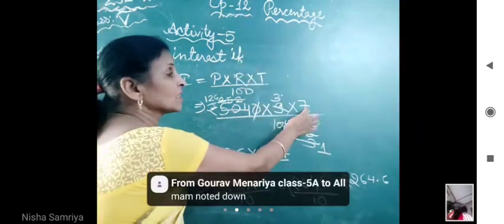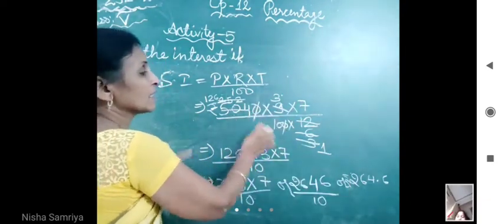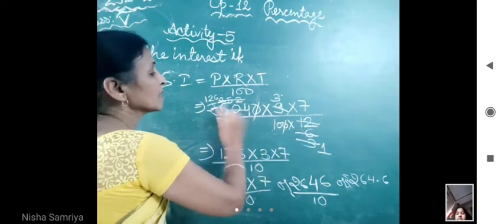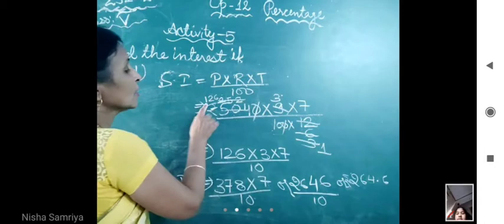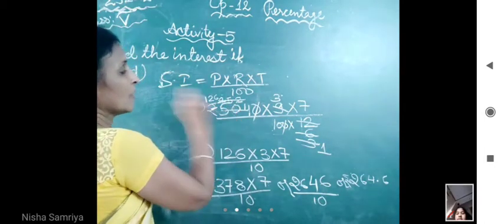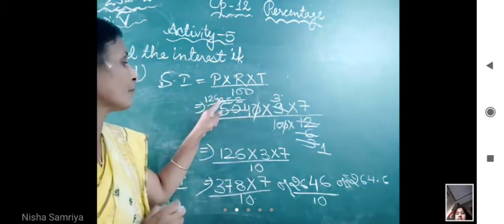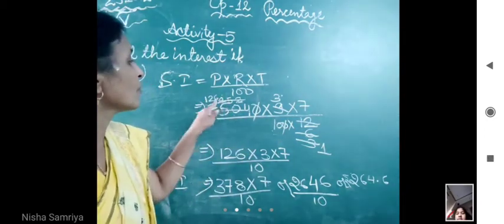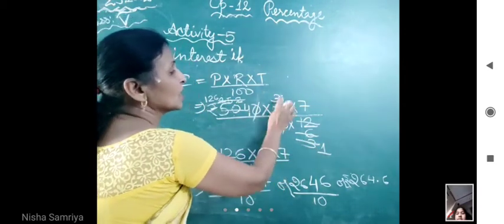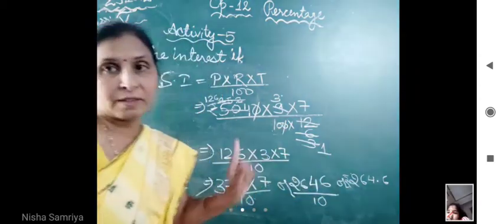You convert it into years, that is 7 upon 12. And rate is 9 percent, so you write 9 upon 100. Now you cancel this 0 with this 0, then you cancel these 2 terms. That is 2, 6, 12 and 2. 2's are 4, 2, 5's are 10, then 2, 2's are 4. Again, with this 2, 2, 3's are 6, 2, 1's are 2, 2, 2's are 4 and 2, 6's are 5. Then cancel it in the table of 3. 3, 1's are 3, 3, 3's are 9. And then you multiply all this and you get the answer. Clear?